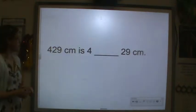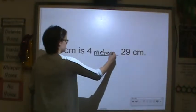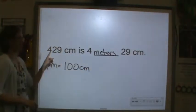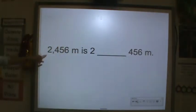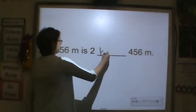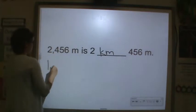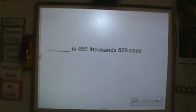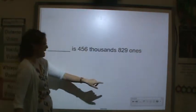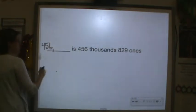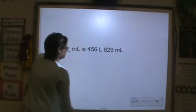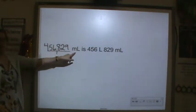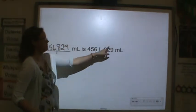So 429 centimeters is 4 meters and 29 centimeters, because 1 meter is equal to 100 centimeters - we just have four groups of 100, so 4 meters. And 2,456 meters is 2 kilometers and 456 meters, because 1 kilometer is equal to 1,000 meters. Now let's look at this: 456 thousands and 829 ones gives us 456,829 - so 456,829 would be the milliliters, because the thousands side is equivalent to the ones side.